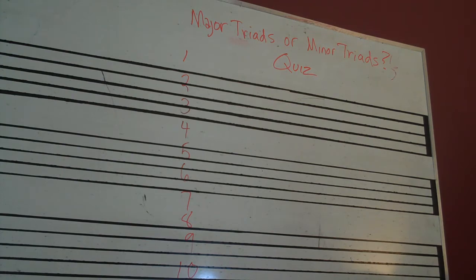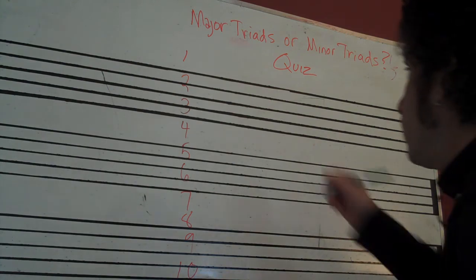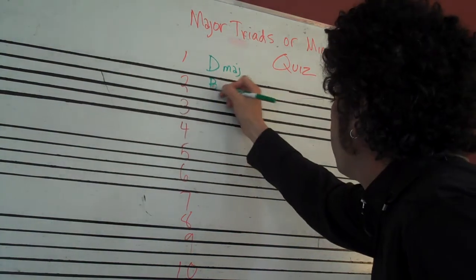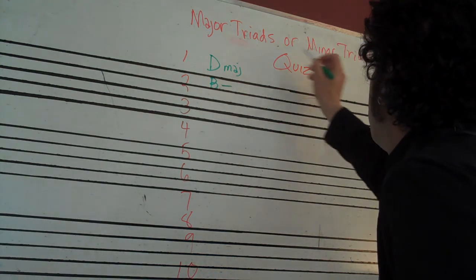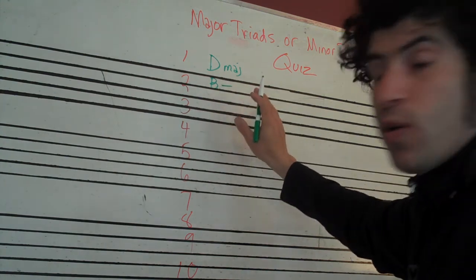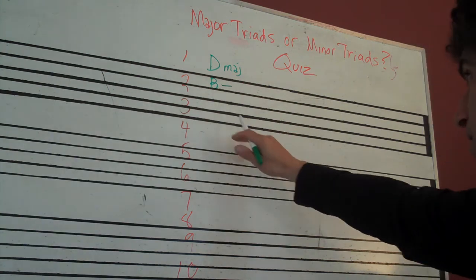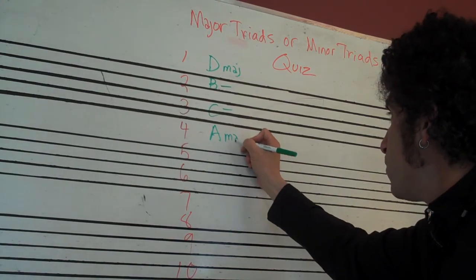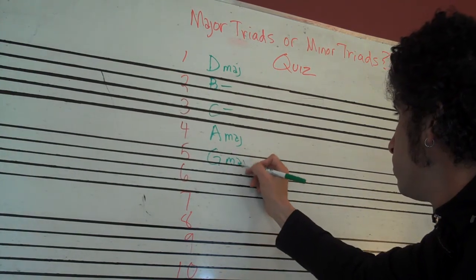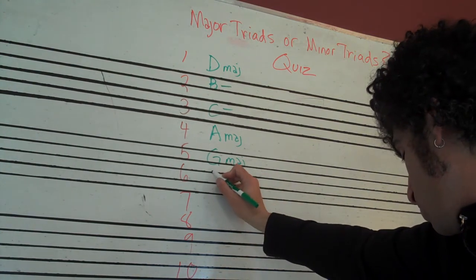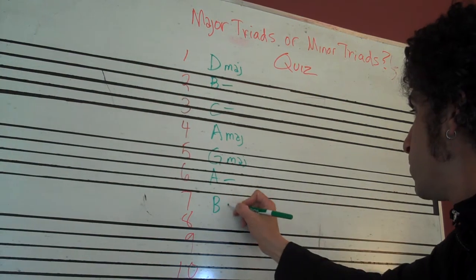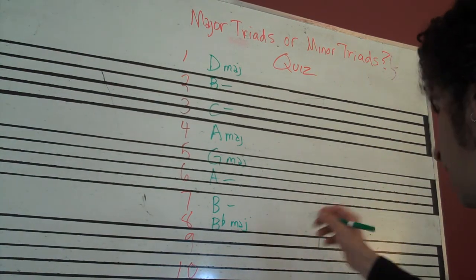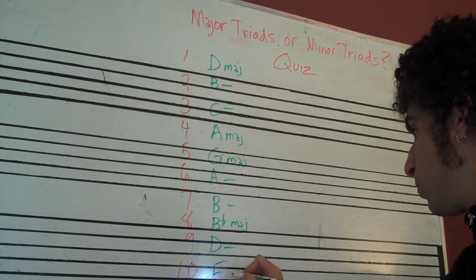Okay, so here are the answers — we'll do this in a different color pen. First one: D major. Second one: B minor. I'm just expecting that you know whether it's minor or major, not necessarily the name of the chords — though if you get that, that would be amazing. Number three: C minor. Number four: A major. Number five: G major. Number six: A minor. Number seven: B minor. Number eight: B flat major. Number nine: D minor. And number ten: F sharp major.